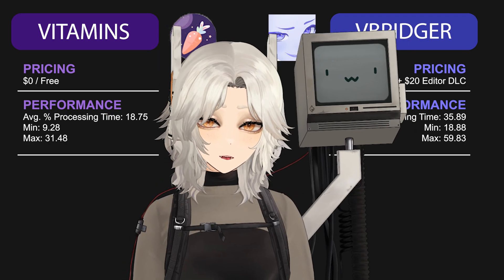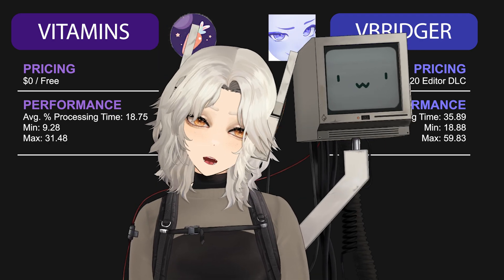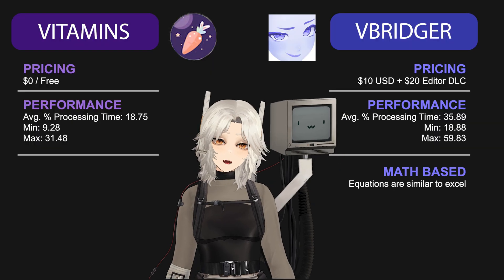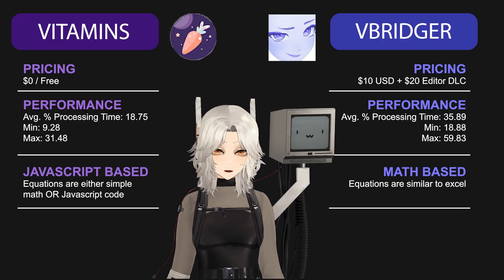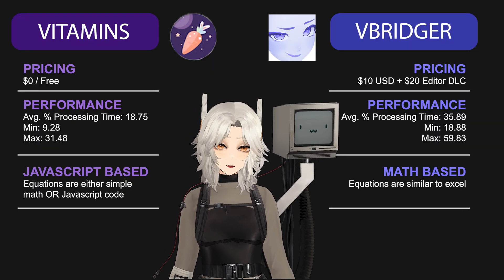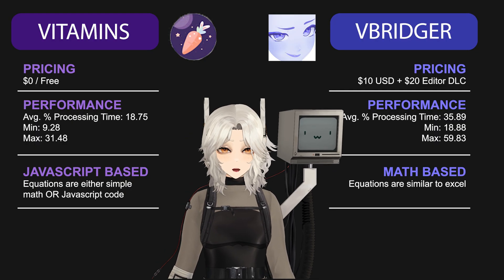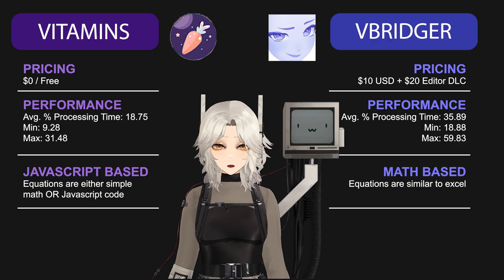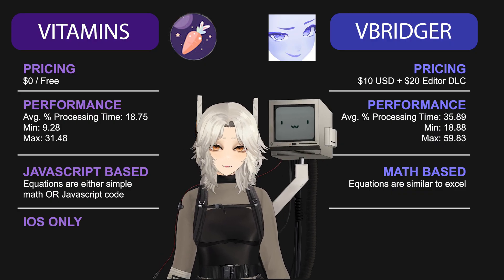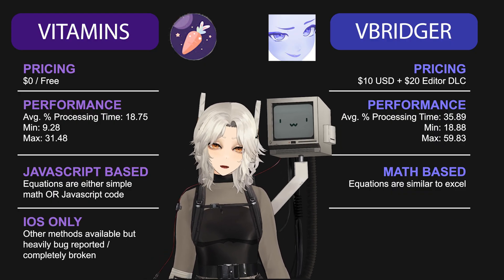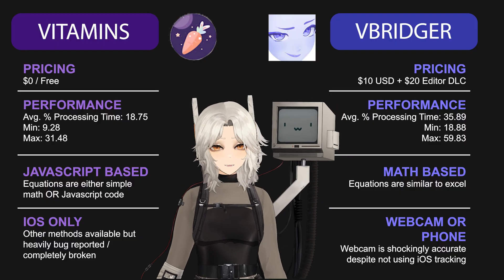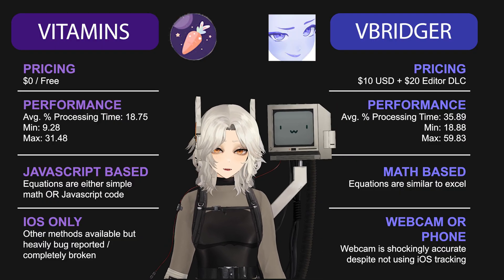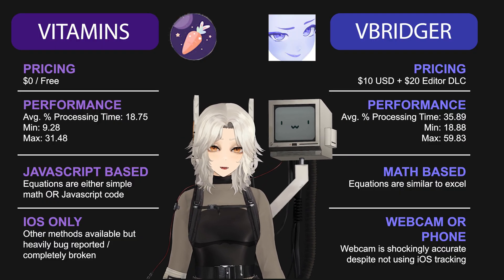But perhaps the most important part, to me anyhow, is that while Vbridger has an Excel-like math system, Vitamins is completely code-based — specifically JavaScript — which gives a little more wiggle room in terms of logic and complexity. It also gives you stuff like date and time, which I love having access to for features on my model like my built-in clocks.